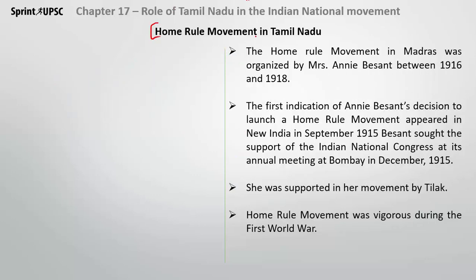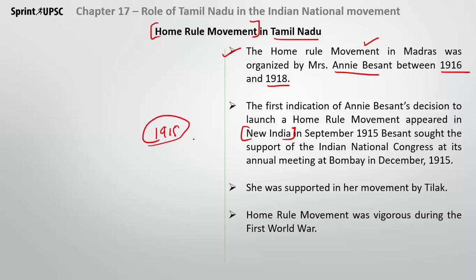Now, how did the Home Rule League movement work in Tamil Nadu? The Home Rule movement was organized in Madras by Annie Besant. The first indication of Annie Besant's decision to launch the Home Rule movement appeared in the New India newspaper in 1915. She was supported in the movement by Tilak Saheb. The Home Rule movement was slightly more vigorous during the First World War period.